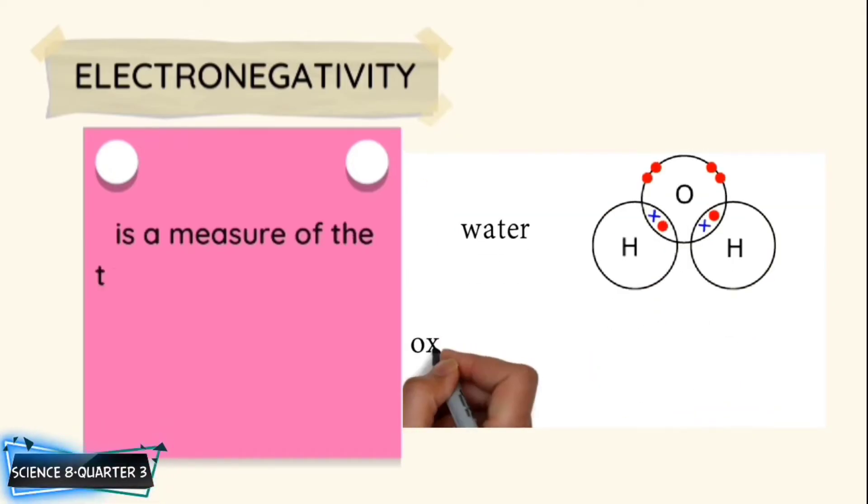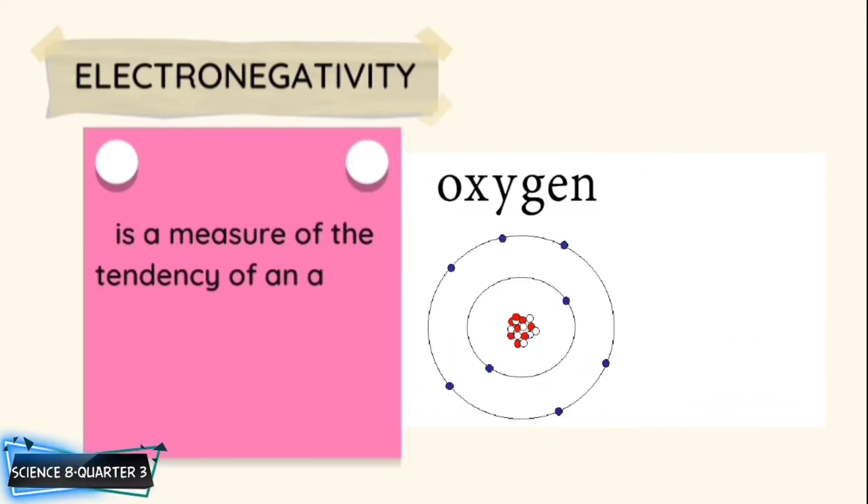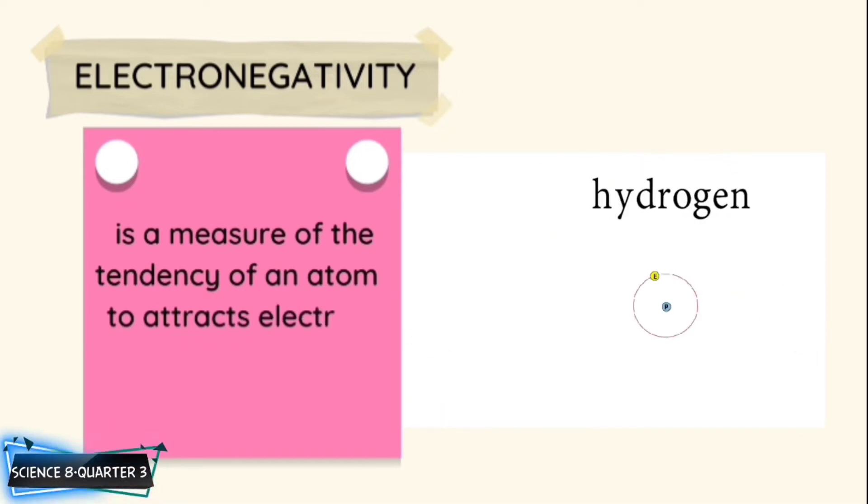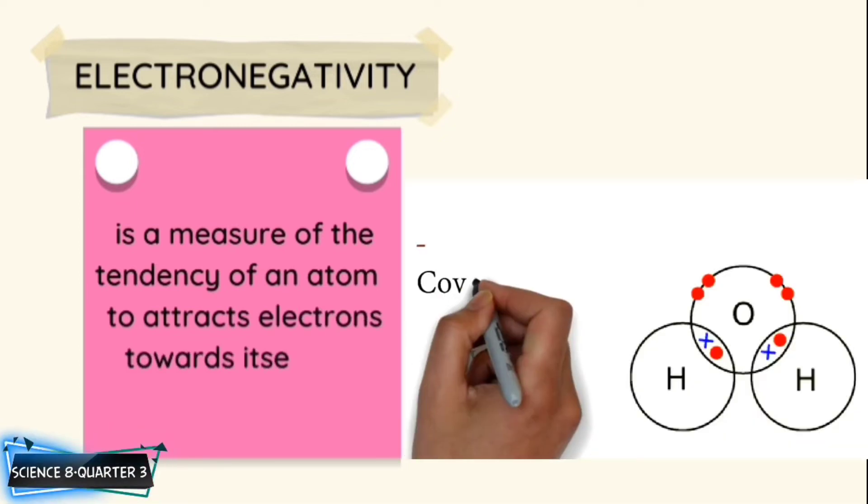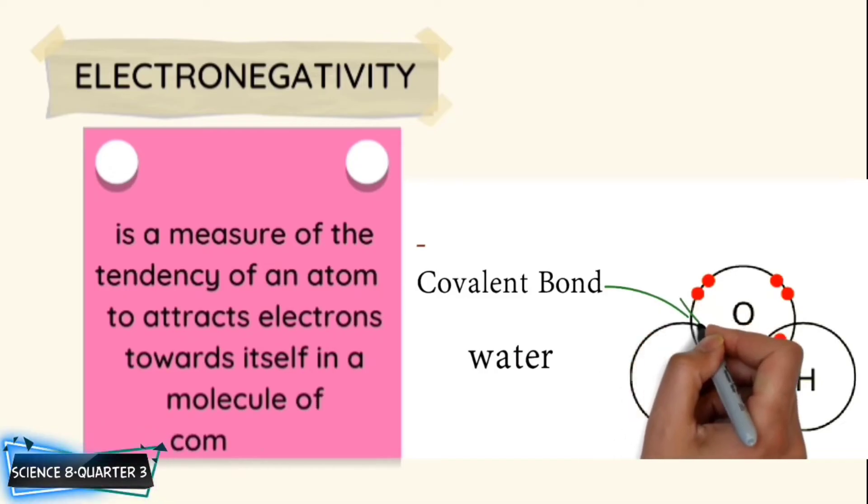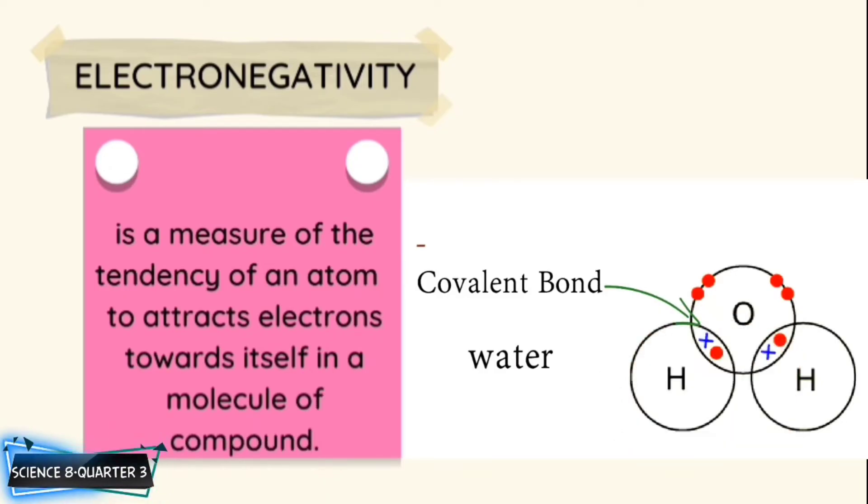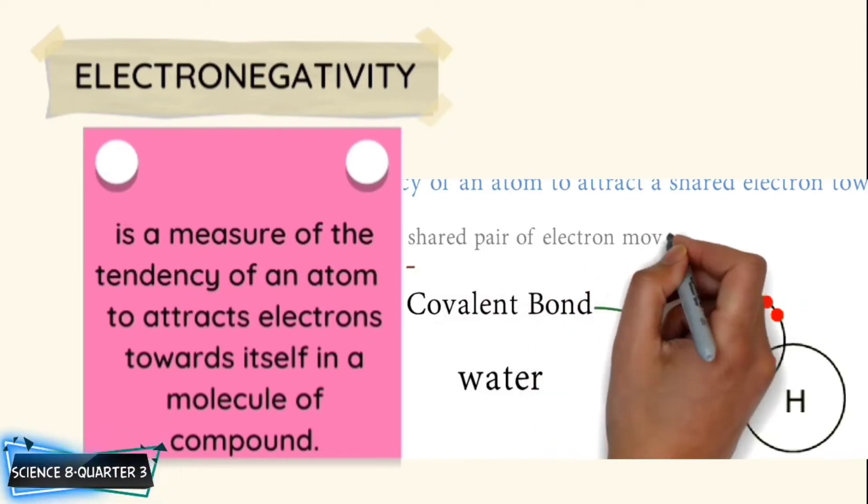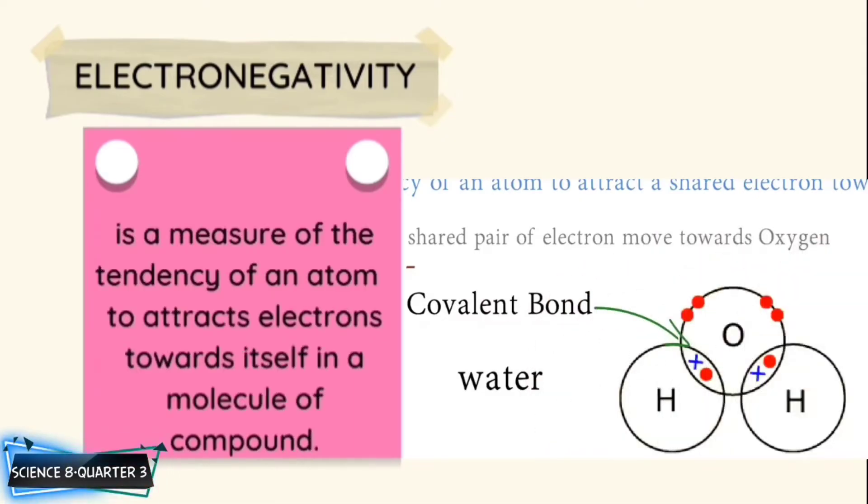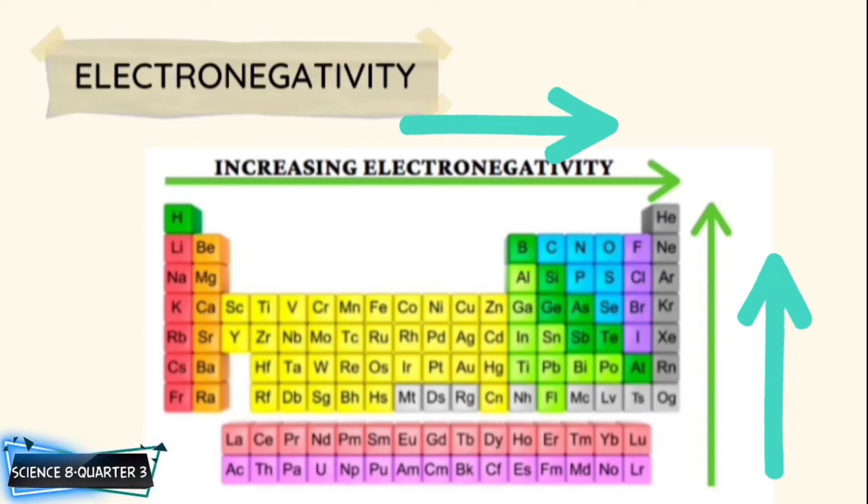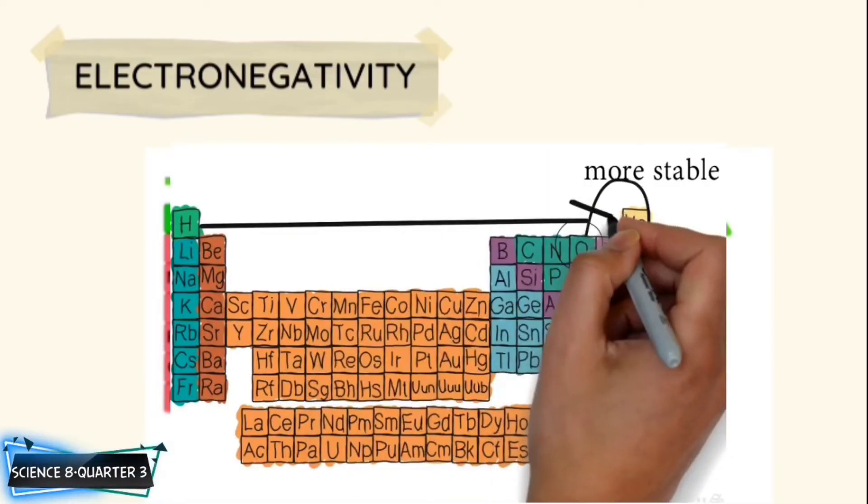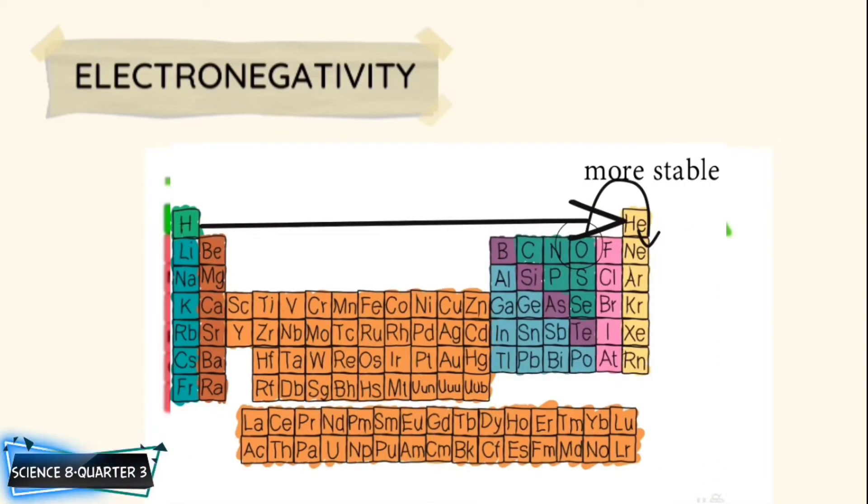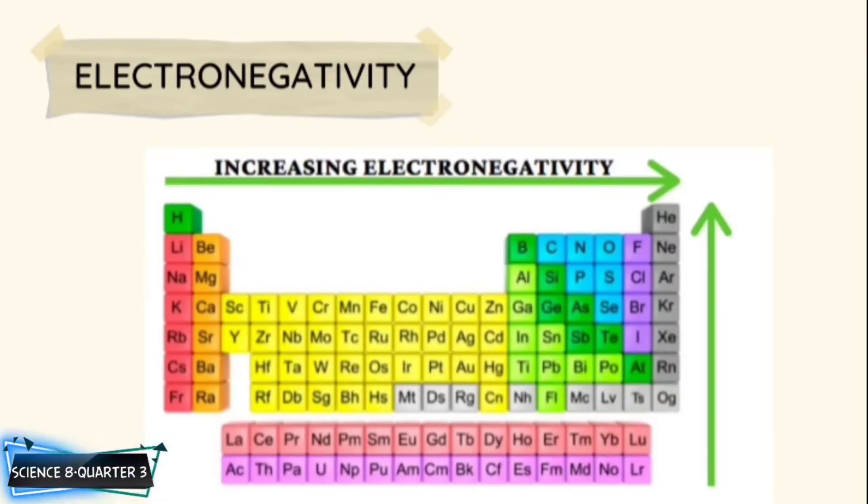Electronegativity is a property that measures the tendency of an atom to attract electrons to form a bond. It was created by measuring the bond energy of different elements joined by covalent bonding. This is observed through periodic trends, as the further right of a period and higher up a group are observed to have increased values in electronegativity. Note that the noble gases do not have an electronegativity value. This periodic trend excludes the noble gases, Group 18.